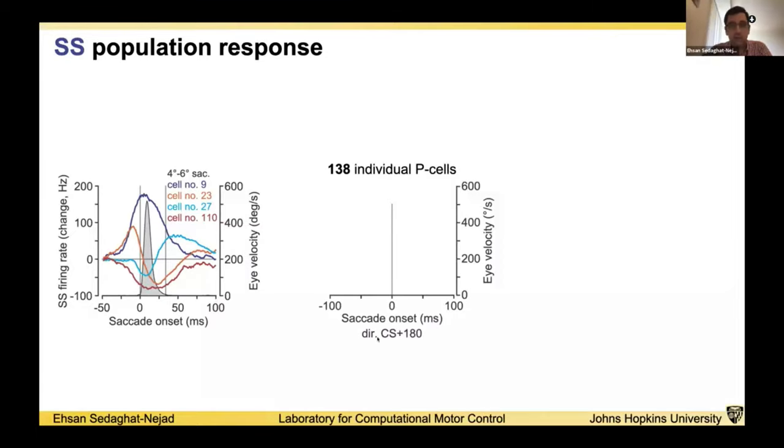To answer that question, we used our relative coordinate system based on the CS tuning. We looked at the population response of all of our 138 Purkinje cells in the direction CS-180. What we found is that the SS firing of the population activity shows a burst in activity, which predicts acceleration of eye movement, and a pause during the deceleration phase of the eye movement. These pauses will precisely predict the end of the eye movement.